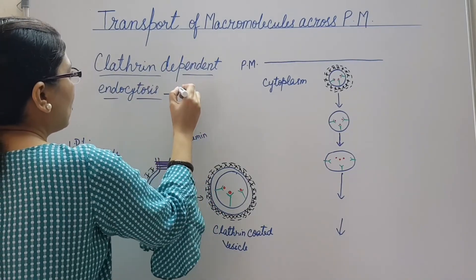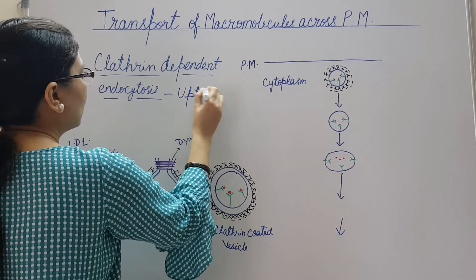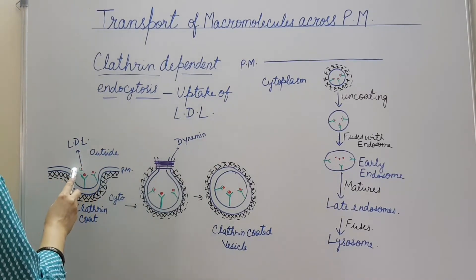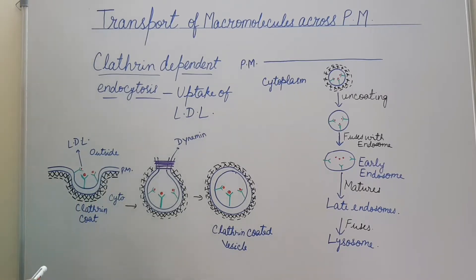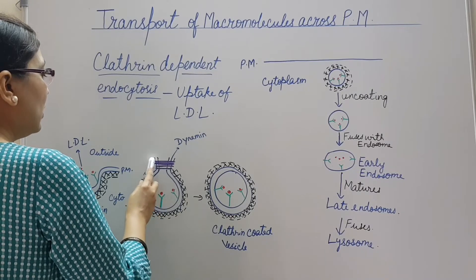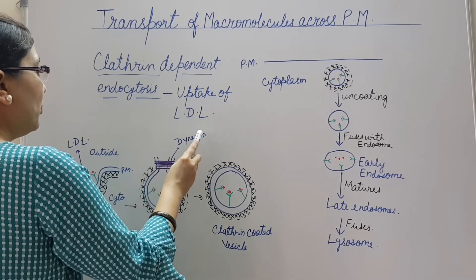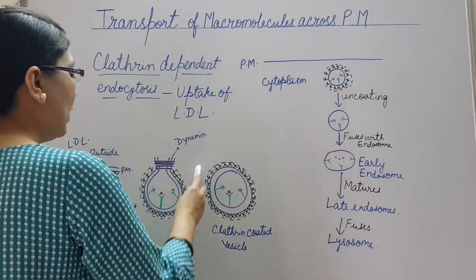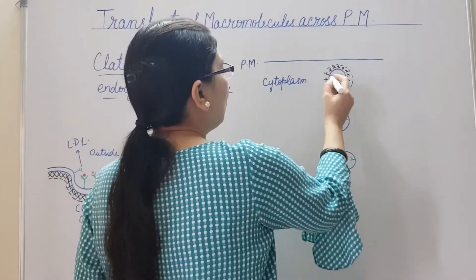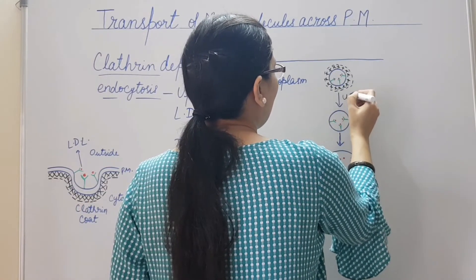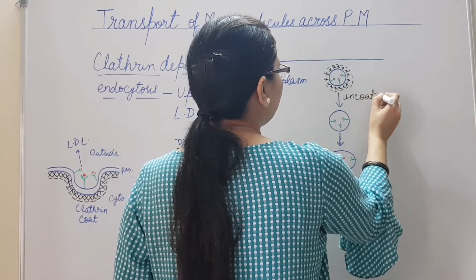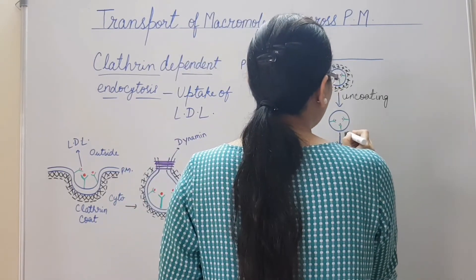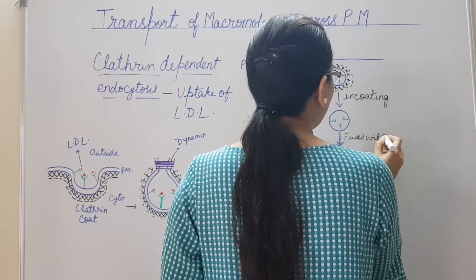An example of clathrin-dependent endocytosis is the uptake of LDL (low density lipoprotein). LDL binds with LDL receptors accumulated in the clathrin-coated pit, then formation of the clathrin-coated vesicle begins at the neck of the bud. The cytosolic protein dynamin polymerizes, GTP is hydrolyzed, and using the energy released from GTP hydrolysis, the clathrin-coated vesicle is formed and released in the cytoplasm. The clathrin coat is then shed, leaving an uncoated vesicle containing the LDL receptor and LDL.